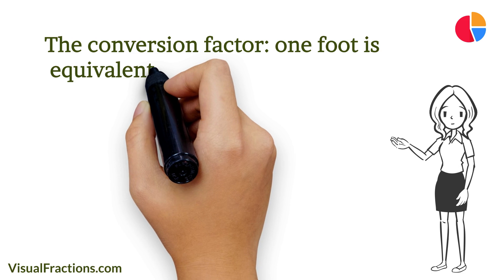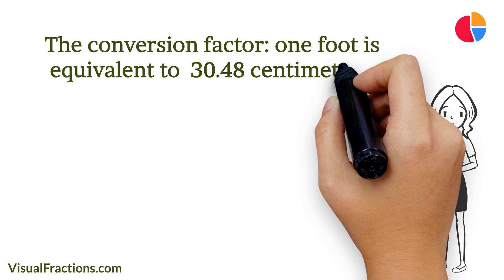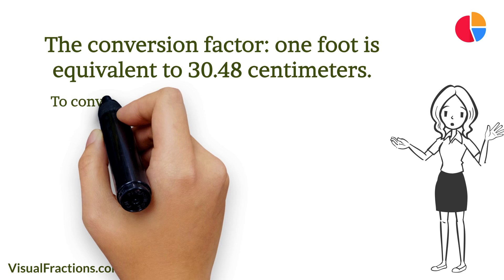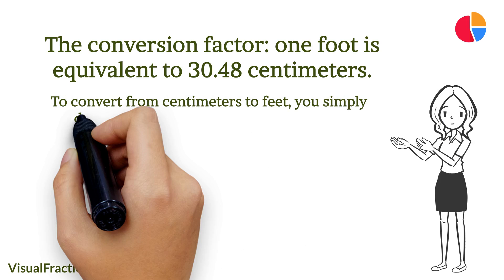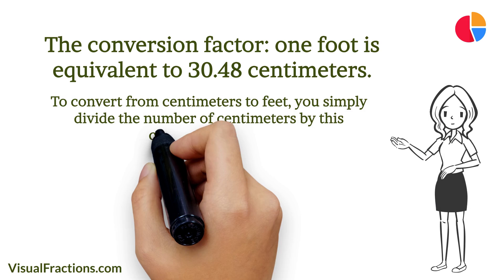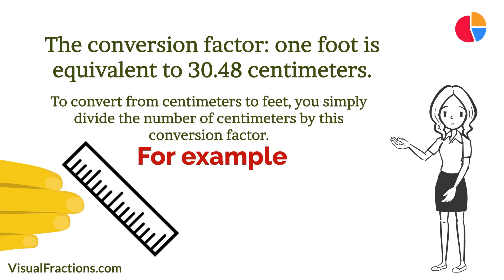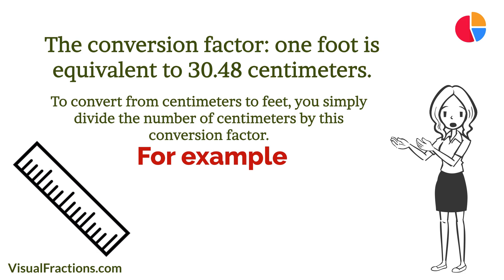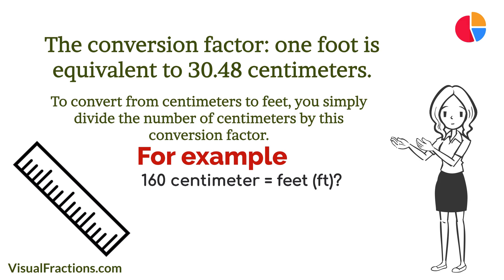One foot is equivalent to 30.48 centimeters. To convert from centimeters to feet, you simply divide the number of centimeters by this conversion factor. Now let's dive into an example — suppose we want to convert a length of 160 centimeters to feet.